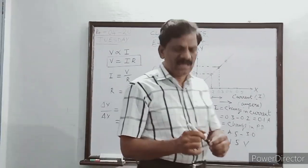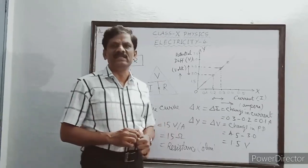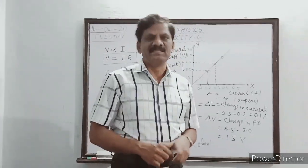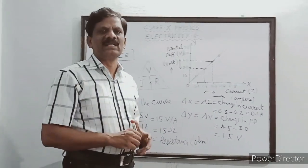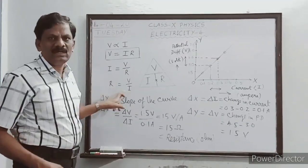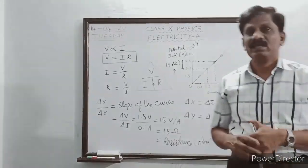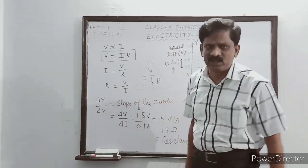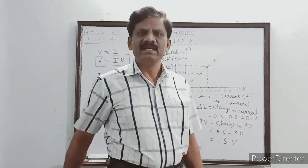The unit of electrical resistance is named after the physicist Georg Simon Ohm, who was a physics teacher. His name is honored as the unit for electrical resistance. From Ohm's law expression, R is equal to V by I. The electrical resistance of a conductor is defined as the ratio of the potential difference across the conductor to the current flowing through the conductor.